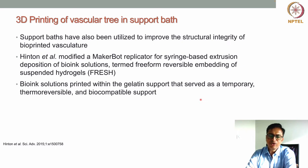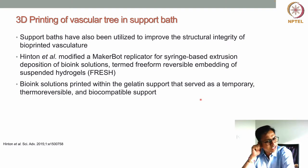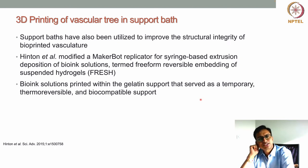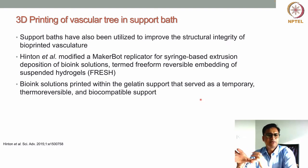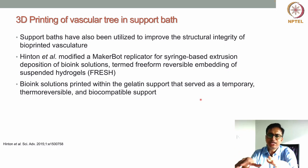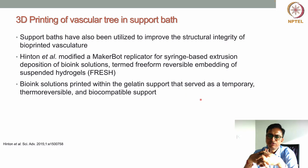One way to tackle this problem is 3D printing in a support bath. One such attempt was done by Hinton et al., where they used a support bath material to improve the structural integrity of the bioprinted vascular construct. They printed a vascular tree with branching in a support bath material using a technology called FRESH — Freeform Reversible Embedding of Suspended Hydrogels.